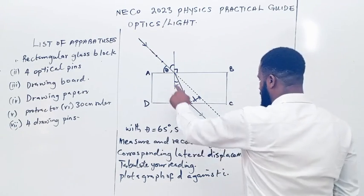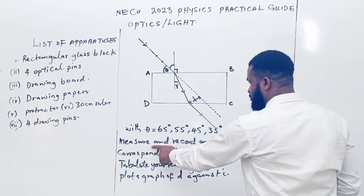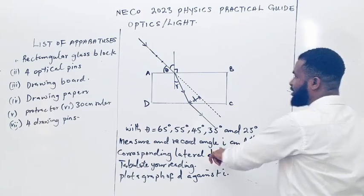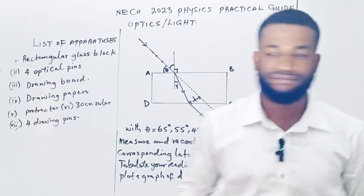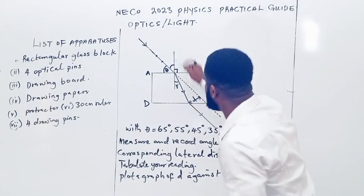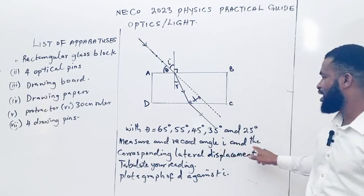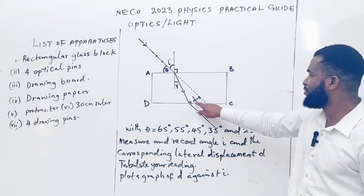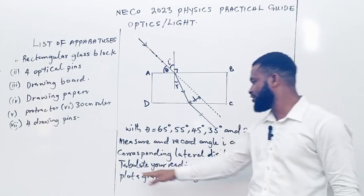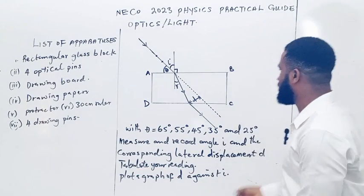For every corresponding angle you measure, you have to measure the incident angle I. So I have to write I for you to know that is the angle, and the corresponding D, the lateral displacement. It says tablet your readings.